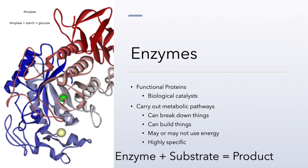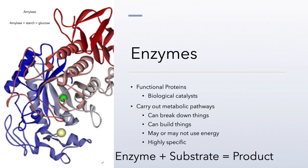When an enzyme binds to something, what it binds to is called its substrate. So an enzyme binds to a substrate, and an enzyme plus its substrate is going to result in a final product. Enzymes are important in metabolism because they are the functional units that carry out metabolic pathways of different types.